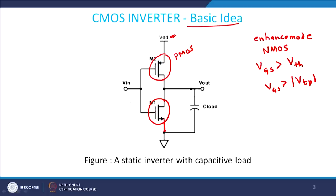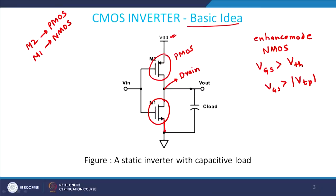So this is a PMOS here — M2 is your PMOS and M1 is your NMOS. The source of M2 (PMOS) is connected to VDD, and the source of M1 (NMOS) is connected to ground. The input is given to the gates of both M1 and M2. In digital VLSI design, the input signal is given to the gate side of the device. The output is taken at the drain of both devices — the drain of PMOS and the drain of NMOS are shorted together.